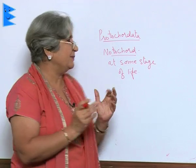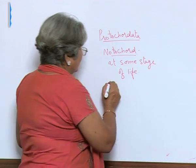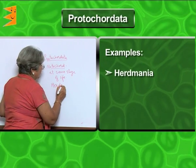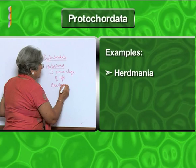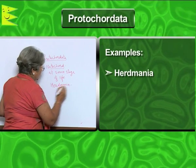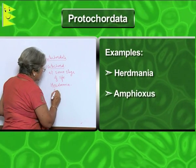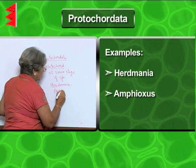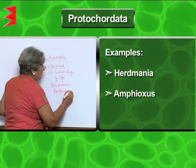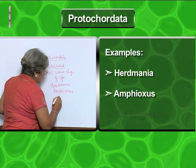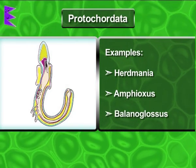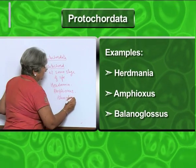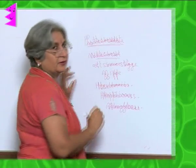The examples of proto-chordata are Herdmania, Amphioxus, and Balanoglossus.